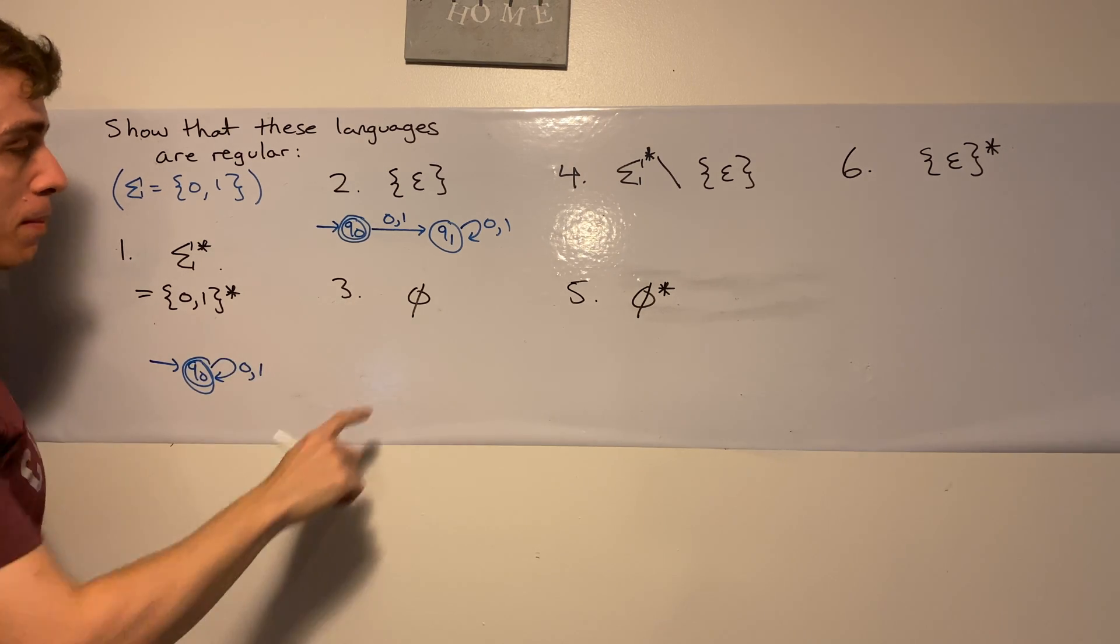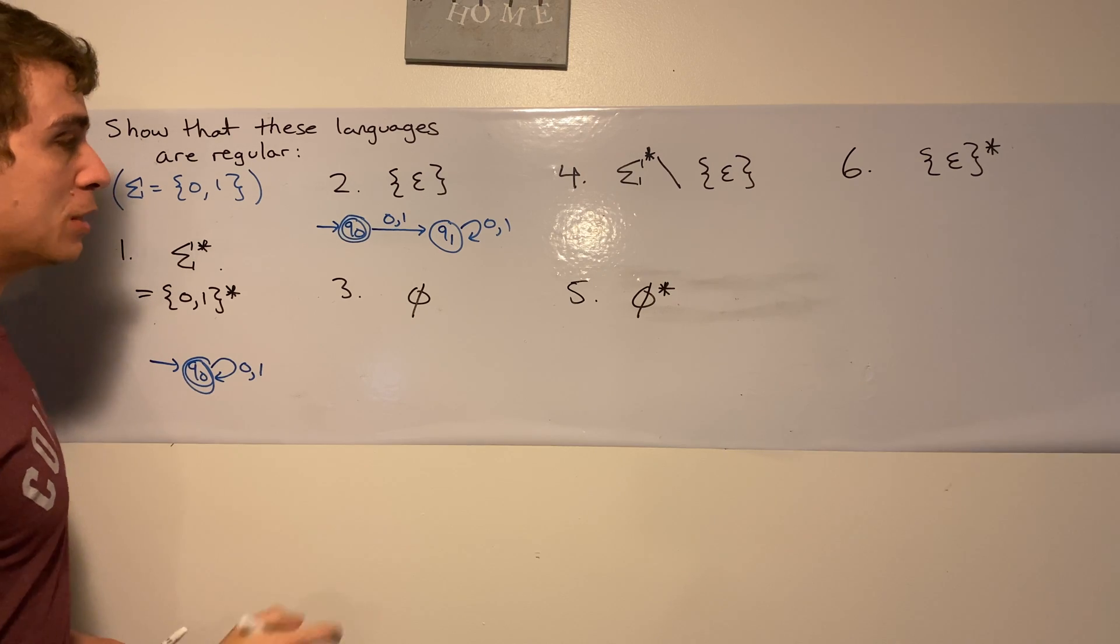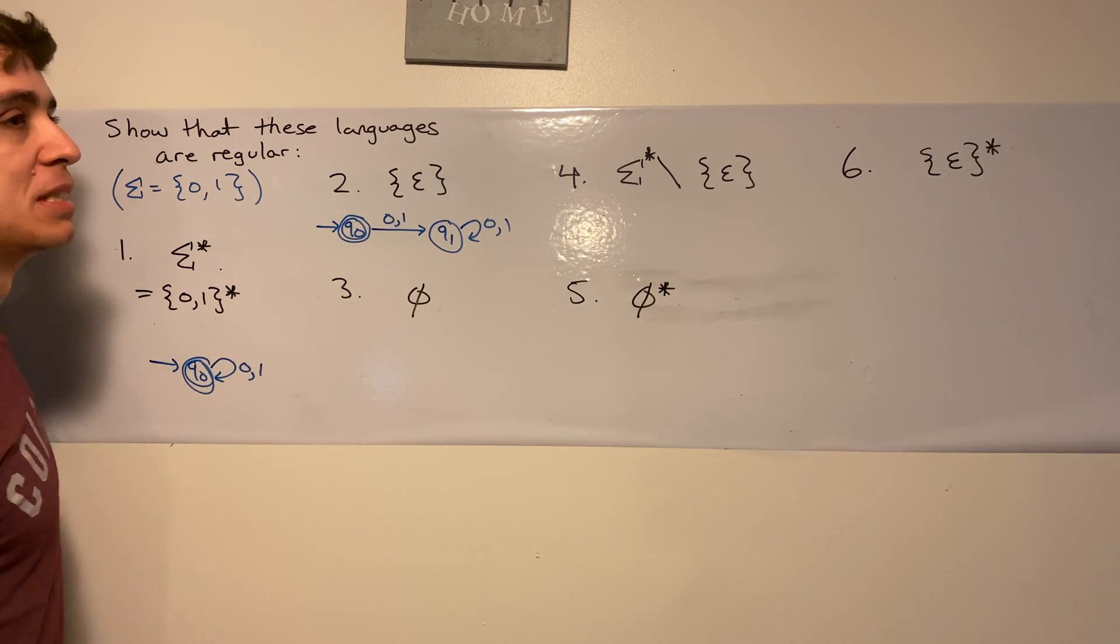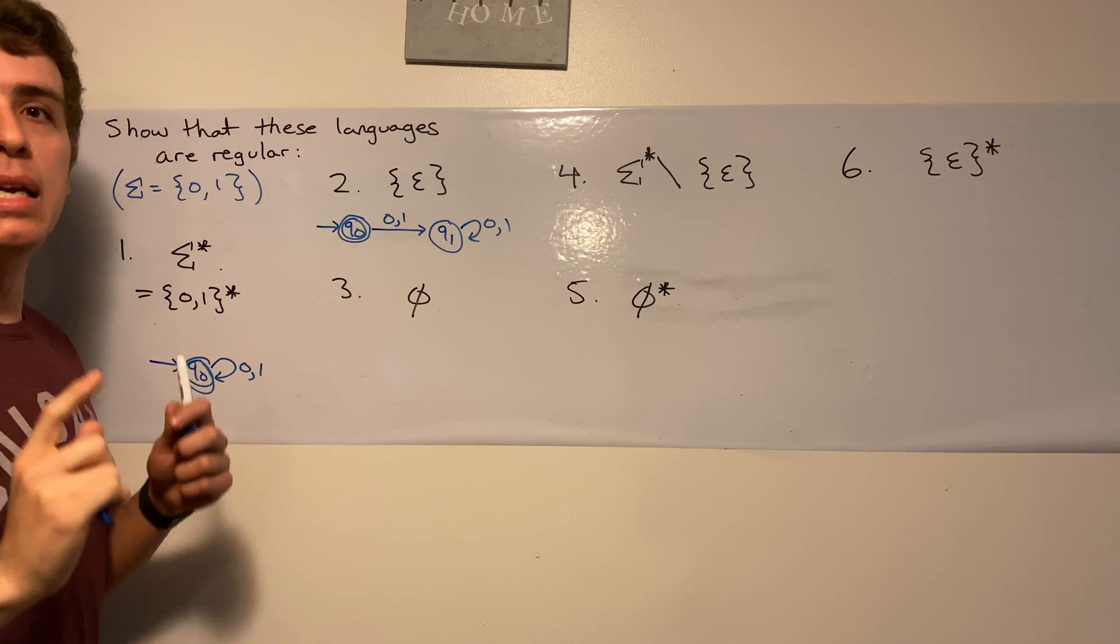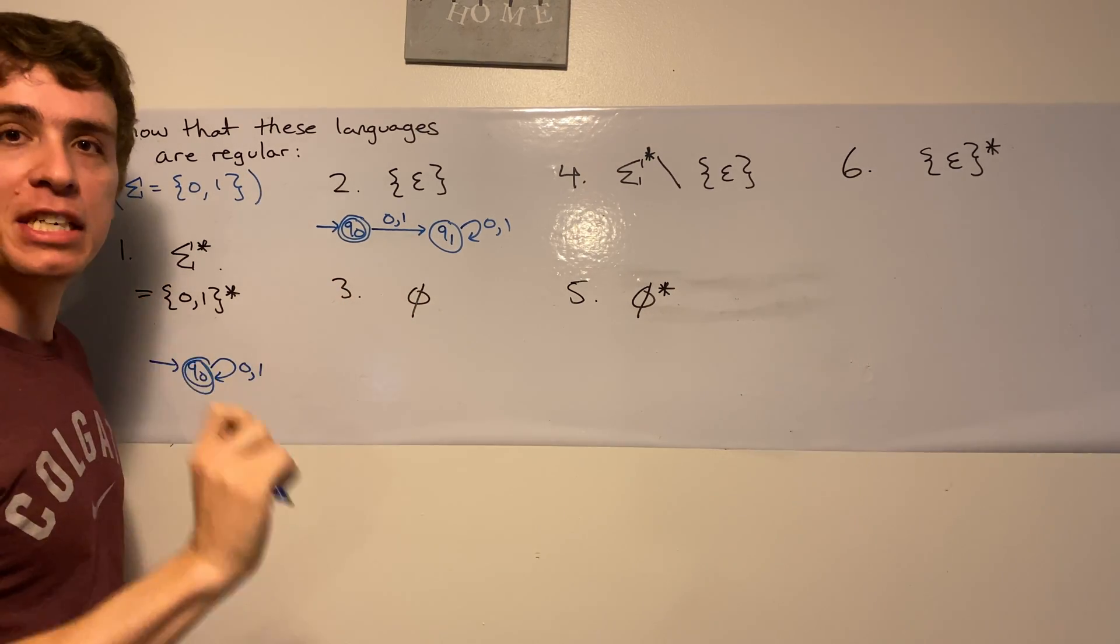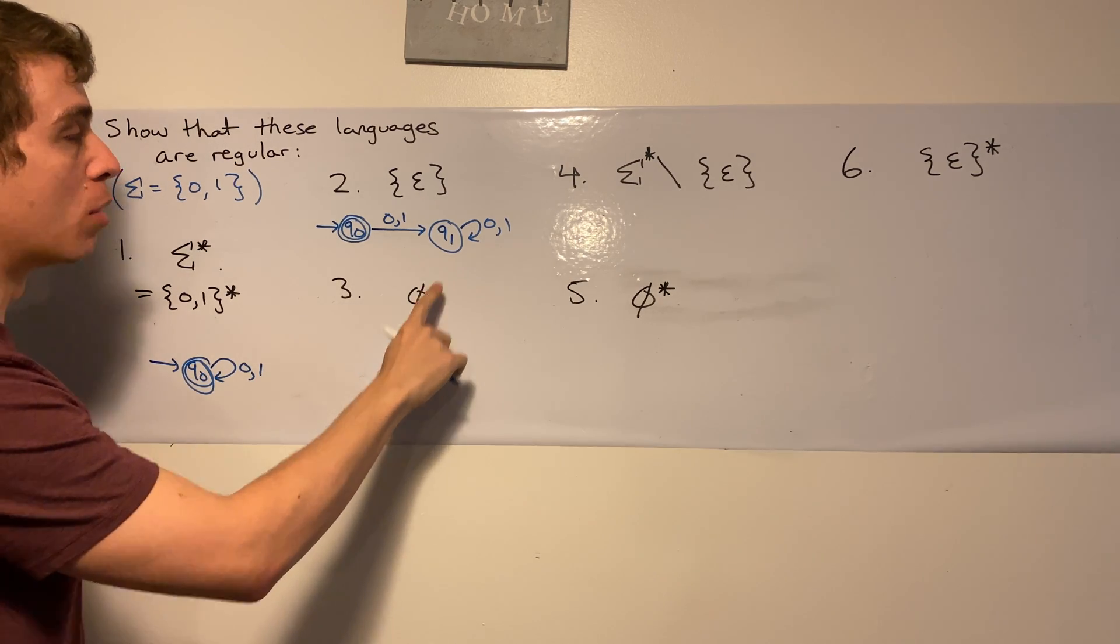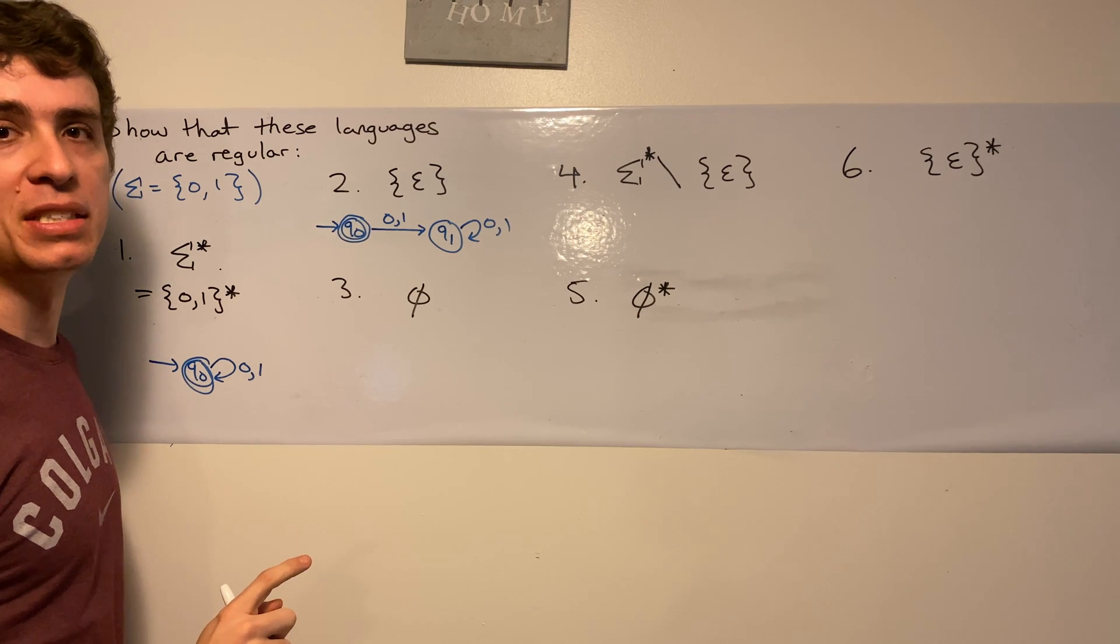Now let's look at the third one. This is the empty set. And a lot of my students would say, oh well, that's just the same thing as this, because it's both empty. It's not true. This set has zero things in it, no strings at all inside this one, whereas this one has a string on the inside.